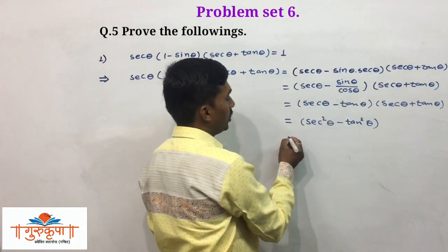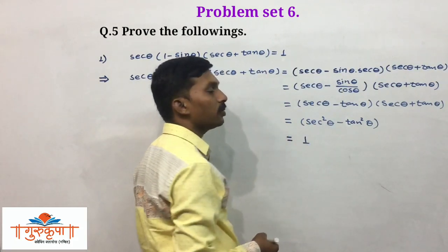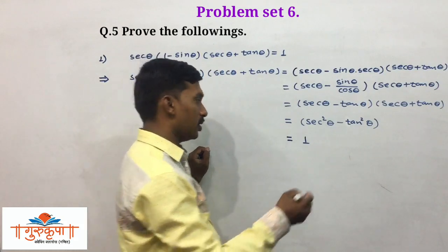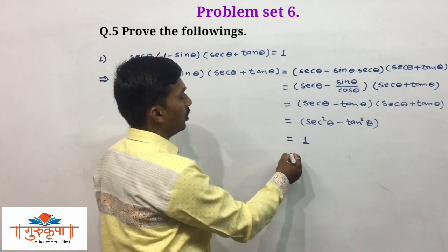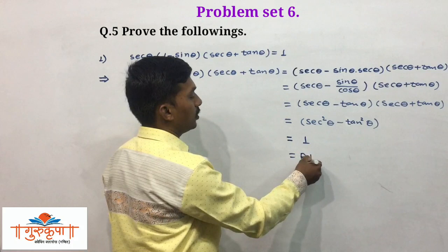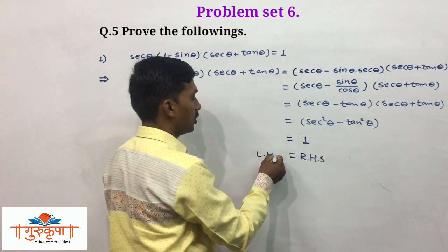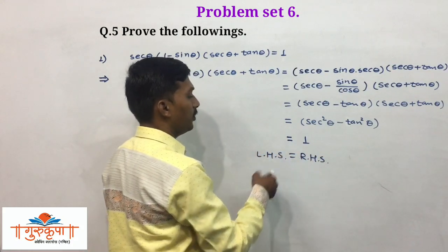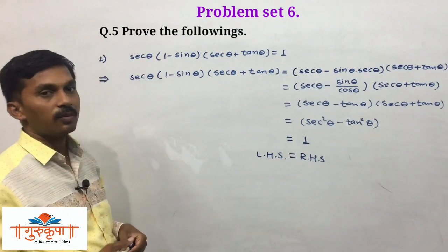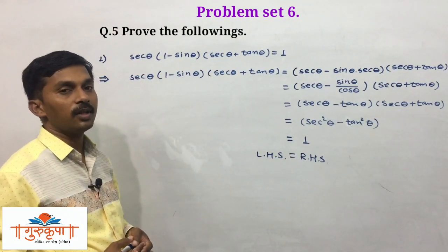We have the identity sec squared theta minus tan squared theta equals 1. So LHS equals 1, which is RHS. This is all about the first example. We will take the next example.